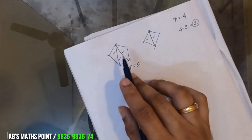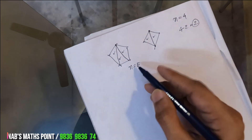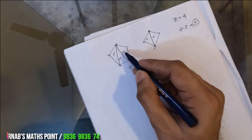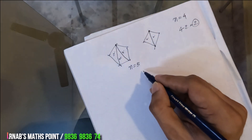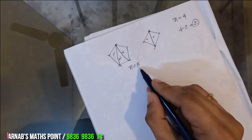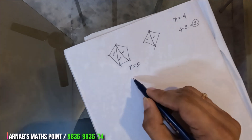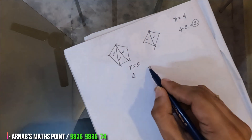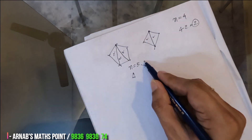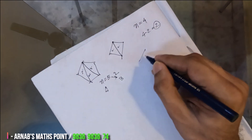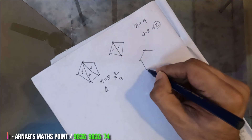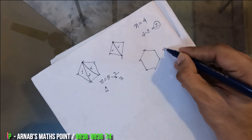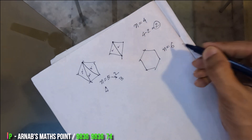When the number of sides is 5, we have 3 triangles. The triangles are less than the number of sides. I will prove this using the hexagon here. Hexagon means n is 6.